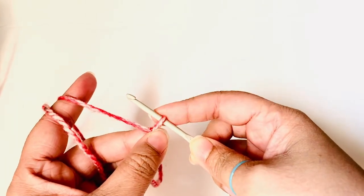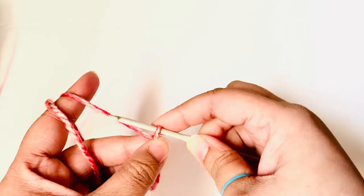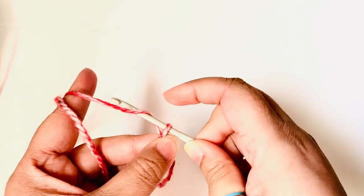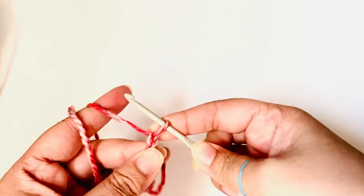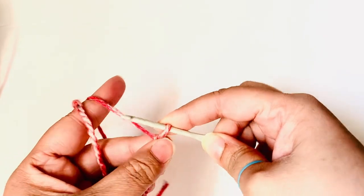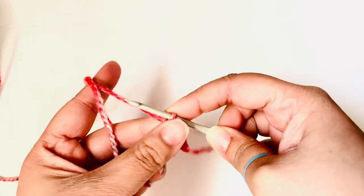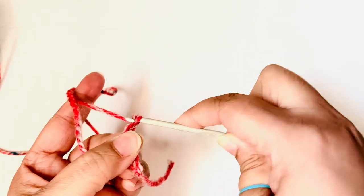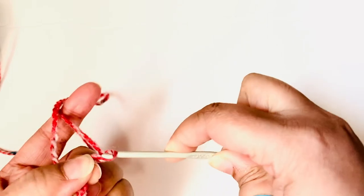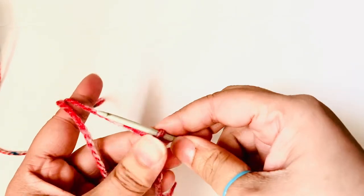So every time I fish through, I adjust my grip and hold it right near the last loop on the hook. Then yarn over, fish it through, adjust my hand. Yarn over, fish it through, adjust my hand. Yarn over, fish it through.